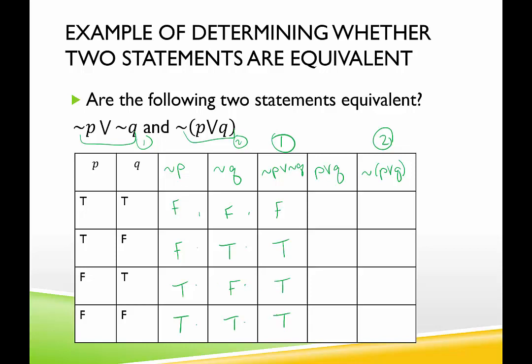Now let's look at statement 2. We have P or Q. For this disjunction to be true, either P has to be true or Q has to be true, or they can both be true. True or true is true. True or false is true. False or true is true. False or false is false. And then for the negation of P or Q, that's going to have the opposite truth value: false, false, false, true.